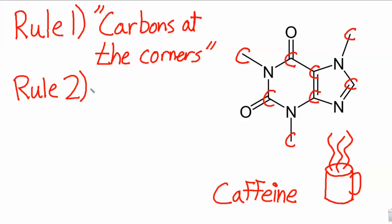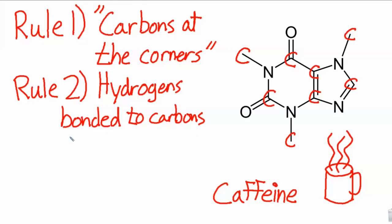Rule number two, hydrogens bonded to carbons are implied. What do I mean by that? I mean that these carbons are supposed to be bonded to four different things, if you remember our bonding rules. And some of these don't have four bonds yet. So this one, we can count one, two, three, four. It only has all four of its bonds. It's following the bonding rules, so it's happy as is.